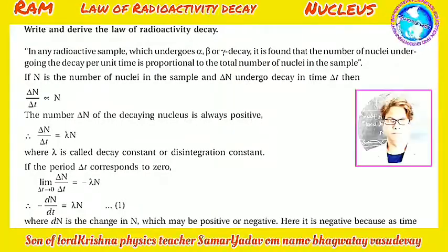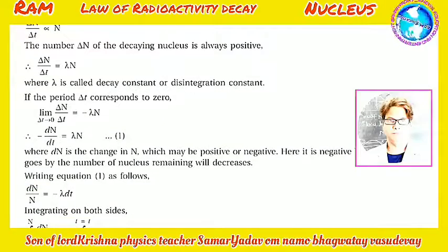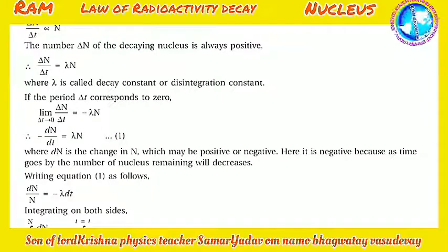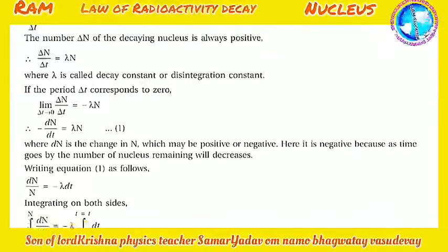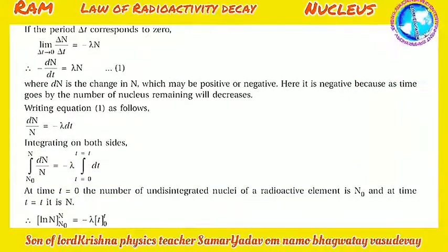If the period ΔT tends to 0, then dN/dt = −λN. Here dN is the change in N, which is negative because as time goes by the number of nuclei remaining decreases. Writing the equation as dN/N = −λ dt.